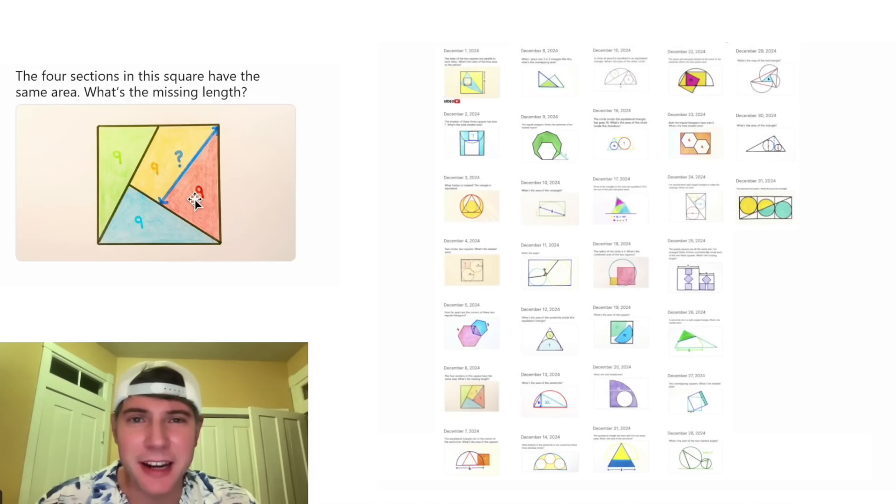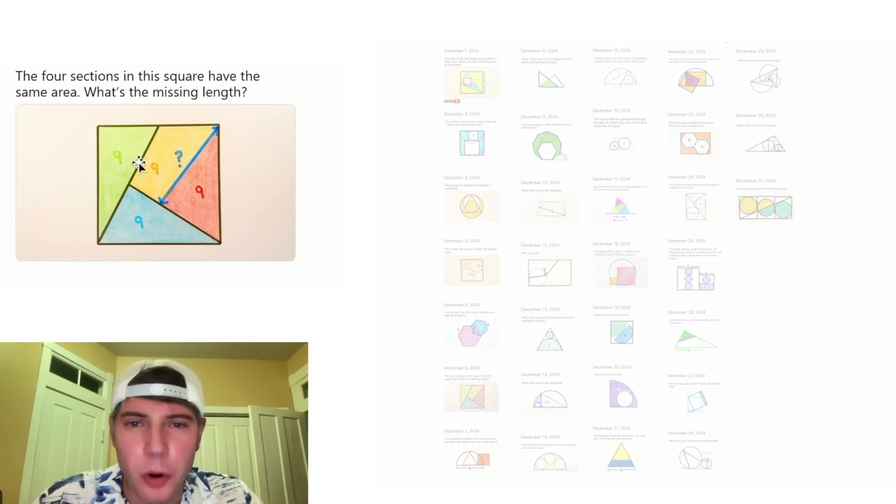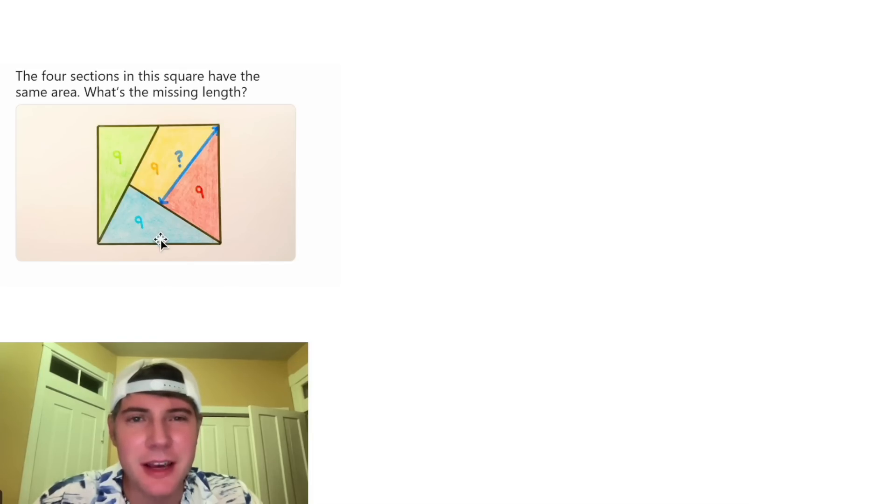Hey guys, this is day six of our Advent calendar. For the month of December, we're going to solve 31 Catriona Ag puzzles in 31 days. It says the four sections in this square have the same area. What's the missing length?